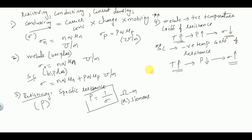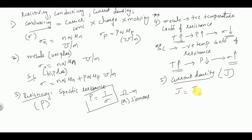Next is current density. The name itself specifies what it is — it is represented by capital J. Generally, any density is represented by quantity per area, so current density is total current divided by area, with units of ampere per meter square. Ohm's law in terms of current density is given by J = σE, where σ represents conductivity.